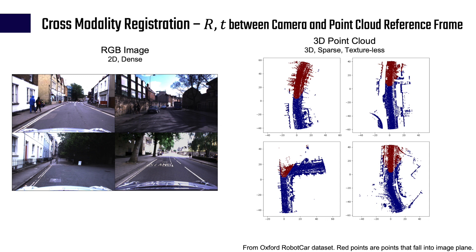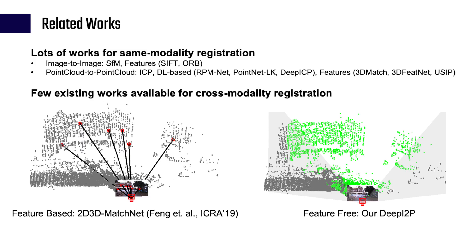Cross-modality registration enables previously impossible applications, for example, mapping with lidar and localization with low-cost cameras. Although there are lots of existing works for same modality registration, there are very few methods for cross-modality registration. To the best of our knowledge, 2D-3D MatchNet is the only prior work targeting general image-to-point cloud registration.